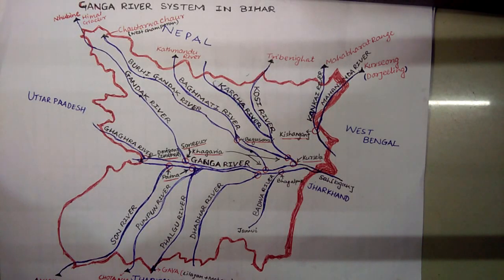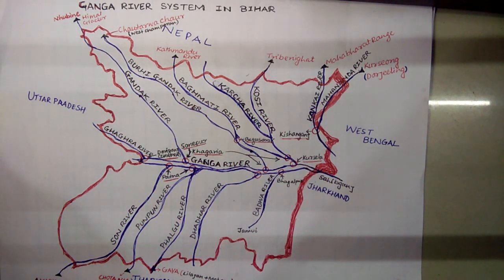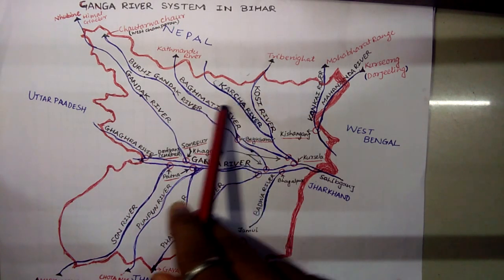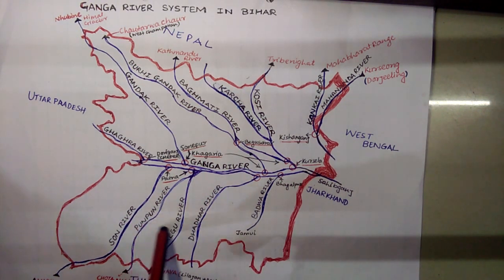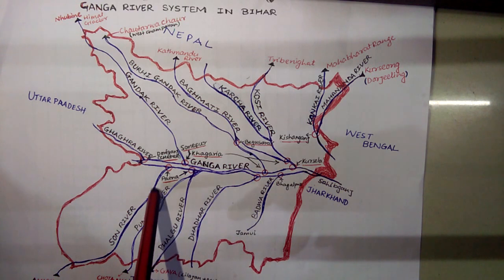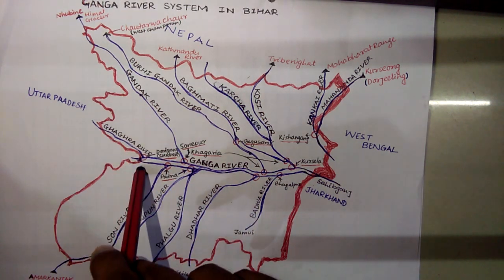Hello friends, I'm Asudev. I did my BTEC from MD University. In this video we talk about the Ganga river system in Bihar. Basically, Ganga divides Bihar into two parts: northern Bihar and southern Bihar. Northern Bihar is called the left bank of the Ganga river system, and southern Bihar is called the right bank of the Ganga river system.